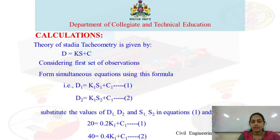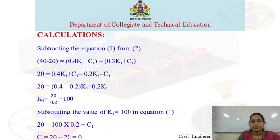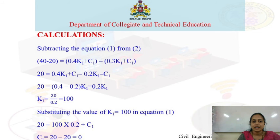Form equations 1 and 2, then simplify by subtracting equation 1 from equation 2. The K1 value obtained is 100. Substitute K1 into equation 1 to get C1. Here, K1 is 100 and C1 is 0.